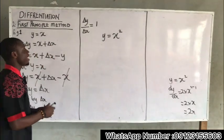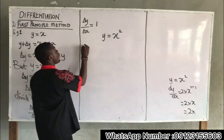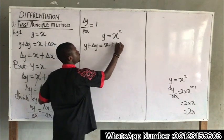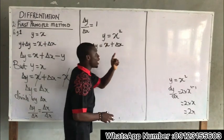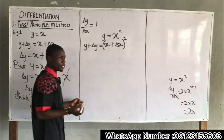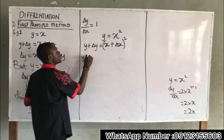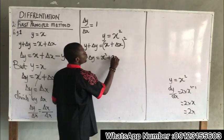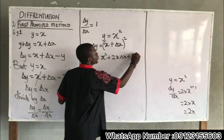Applying the first principle: y plus Δy equals x plus Δx, all squared. Expanding the right side using the binomial expansion — x plus Δx, all squared — gives: y plus Δy equals x squared plus 2x·Δx plus Δx squared.